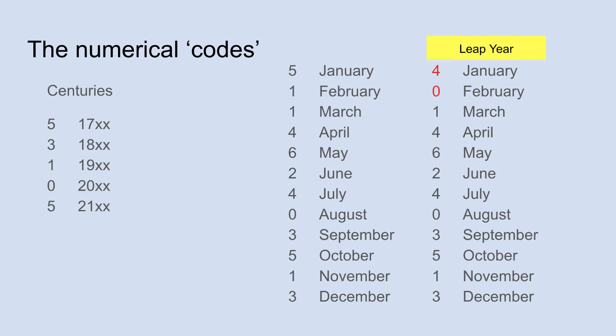The codes for the months also have to be memorized, and there are various mnemonics you can use. However, you can figure them out if needed. All you need to remember is that January is 5. Since January has 31 days, February would be 5 plus 31 mod 7 — that's 36 mod 7, which is just 1. Since February has 28 days, which is 0 mod 7, adding that to 1 gives 1 again, which is why March is 1. March has 31 days, which is 3 mod 7, so you add 3 to 1 and get 4 for April. You can see how the sequence works from there.